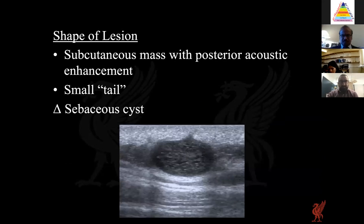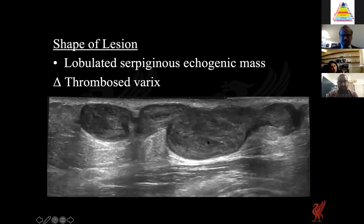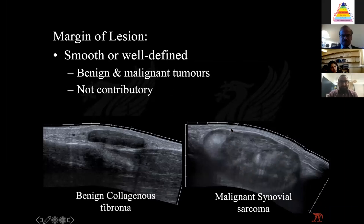Shape of the lesion is helpful. One case showed a very well-defined lesion with a tail going up to the dermis — combined with other characteristic features this helped diagnose an epidermal cyst on ultrasound. Another example where shape is very characteristic is that of a thrombosed varix — a lobulated snake-like lesion continuous with a vein, diagnosed as a thrombosed varix on imaging alone.